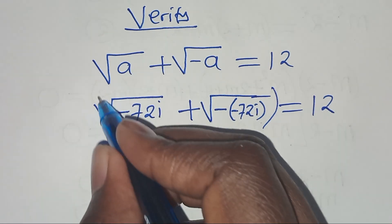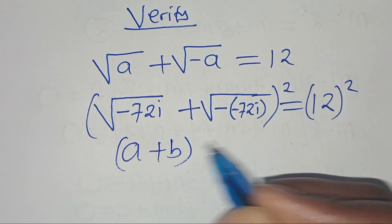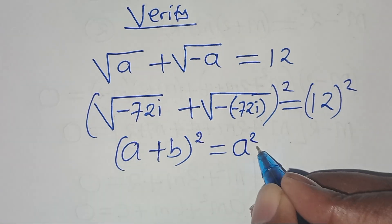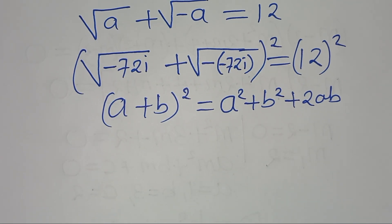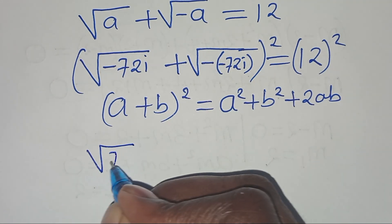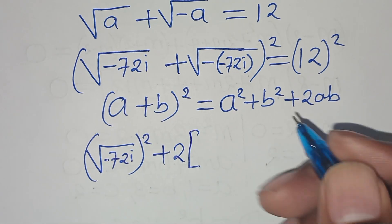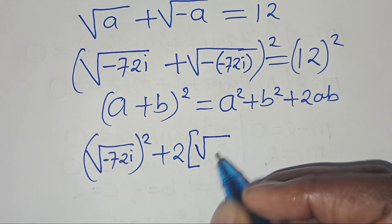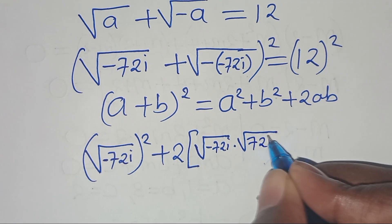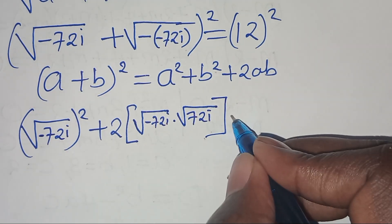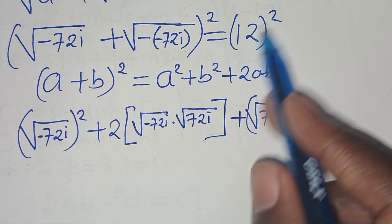Squaring both sides using (a+b)² = a² + 2ab + b²: we get (√(−72i))² + 2·√(−72i)·√(72i) + (√(72i))² = 144. This gives −72i + 2·√(72²·(−1)·i²) + 72i = 144. Since i² = −1, we have (−1)·(−1) = 1.